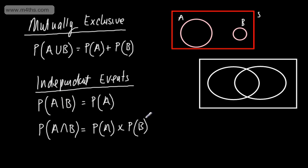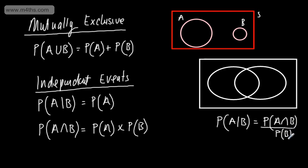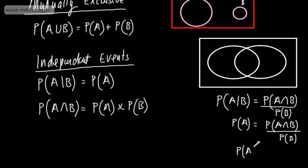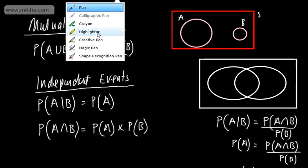To show why this works, the probability of A given B equals the probability of A intersection B divided by the probability of B. For independent events that gives the probability of A. So multiplying both sides by the probability of B, we see that the probability of A multiplied by the probability of B equals the probability of A intersection B. These formulae should be fairly logical — the probability of A given B has already happened won't influence the probability of A, so we just write the probability of A, and we multiply probabilities using the multiplication law for independent events.